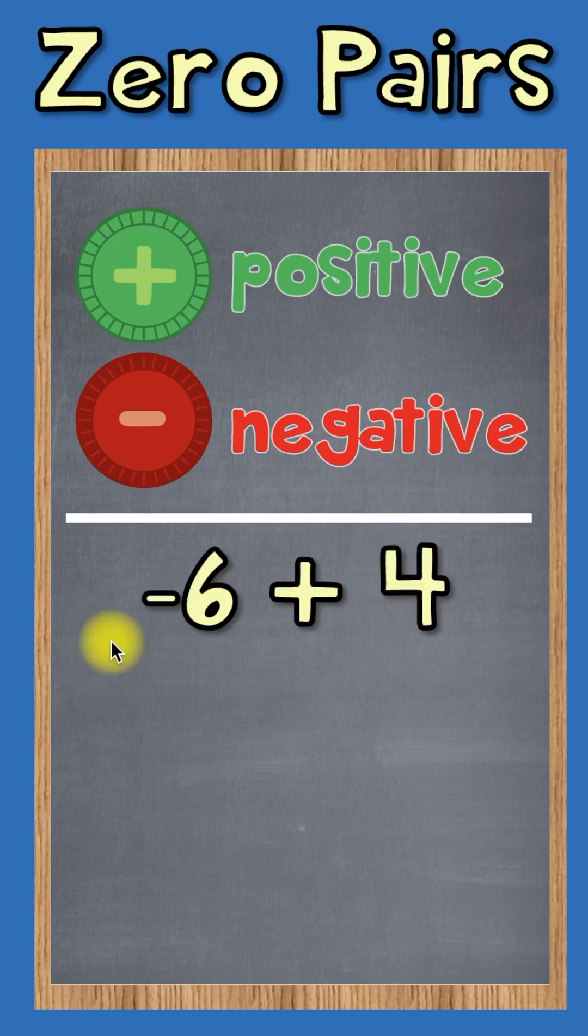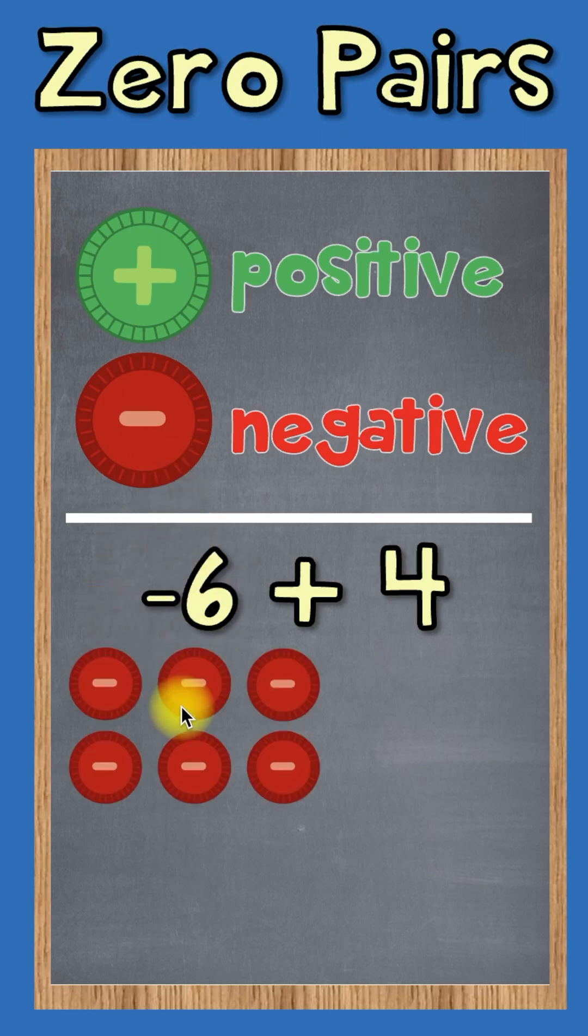Let's say we have the example negative six plus four. Negative six will be shown using six red counters and positive four will be shown using four green counters.